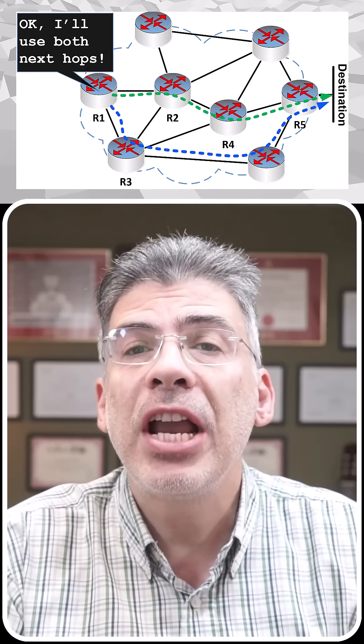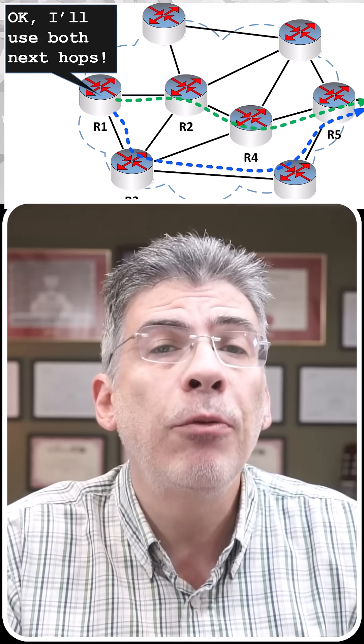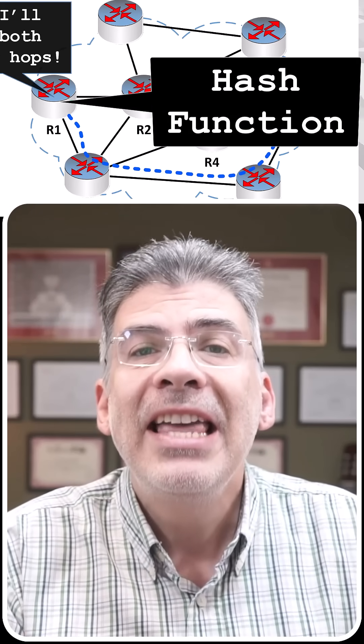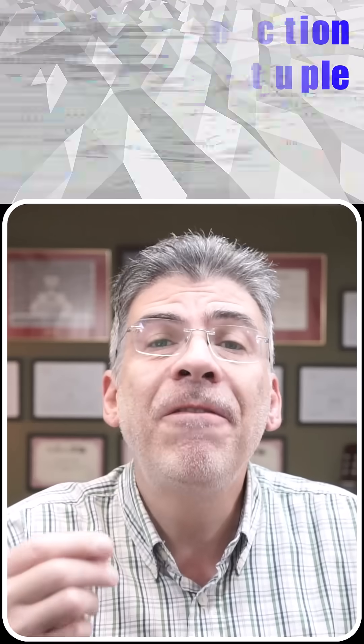Traffic is load shared across those next hops on a per flow basis. The choice of path for each flow is determined using a hash function that is applied to the following five tuple: